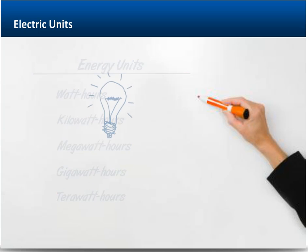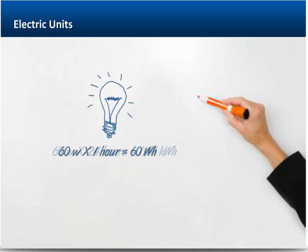Again, considering our lamp, the 60-watt bulb uses 60 watt-hours of energy if it is left on for one hour. If you leave it on for a 24-hour period, it would consume 1,440 watt-hours, or 60 watts times 24 hours, which is the same as 1.44 kilowatt-hours.